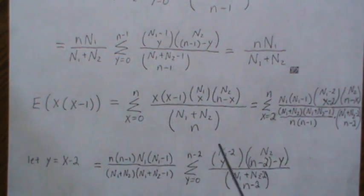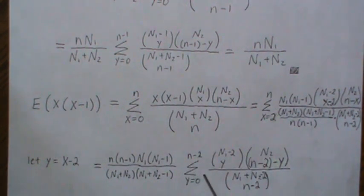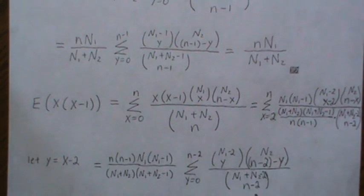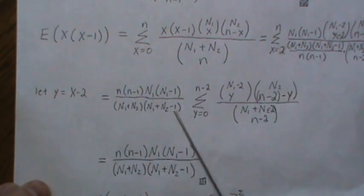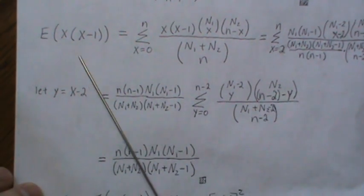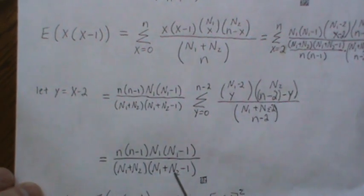Well, this is a new hypergeometric distribution with the sample size of N minus 2 and the appropriate sample size in the different populations. So this sums to 1. And so we're left with just this out front. And so this is the factorial moment, second factorial moment.